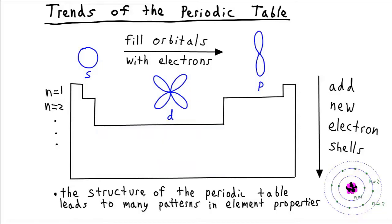One of the wonderful features of the periodic table is that it has an awful lot of trends built into it. And these trends are really useful because just by looking at the periodic table and seeing an element is here, an element is there, you can make all sorts of qualitative inferences about the relative properties.